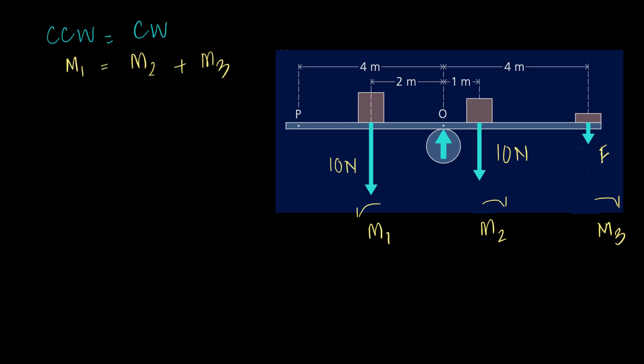M1 is 10 Newtons, 2 meters away, so that's 10 times 2. M2 is 10 also, but 1 meter away, so that's just 10 times 1.